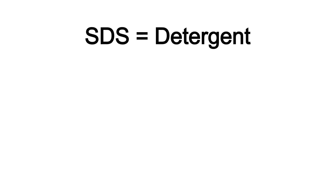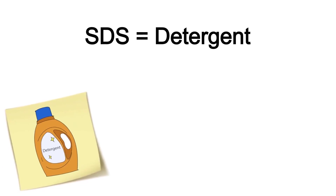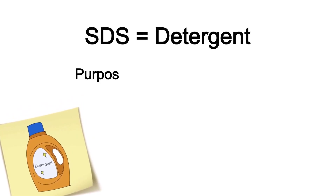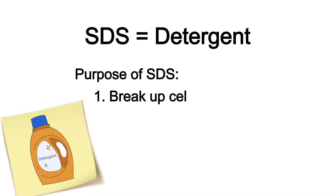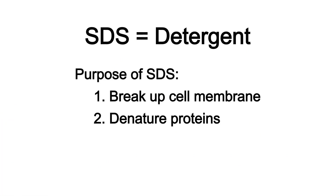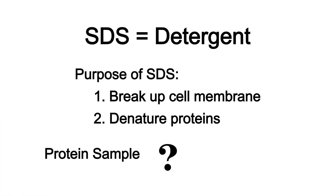SDS is a strong detergent that is used in the lab for several purposes, such as breaking up cell membranes and denaturing proteins. In this video, we will explain what SDS does to a protein sample and why it's used in SDS-PAGE.